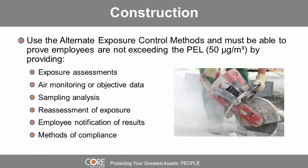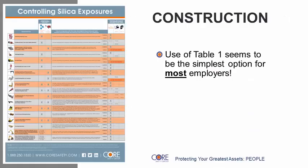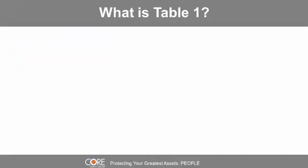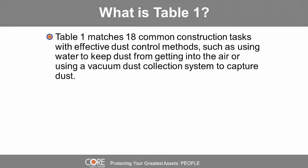Alternate exposure control methods include exposure assessments, air monitoring, objective data, sampling analysis, reassessment of exposures, employee notification of results, and methods of compliance. The use of OSHA's Table 1 seems to be the simplest option for most employers. Table 1 matches 18 common construction tasks with effective dust control methods.